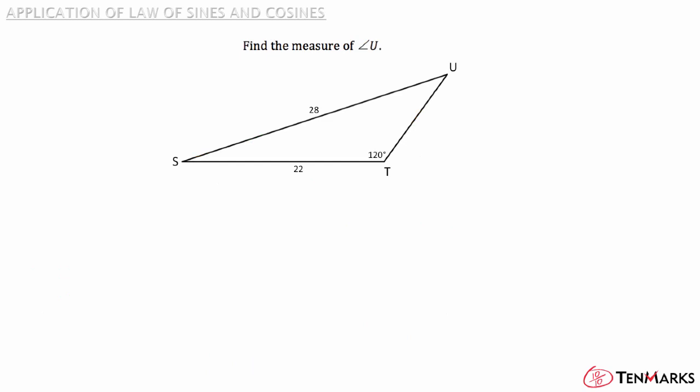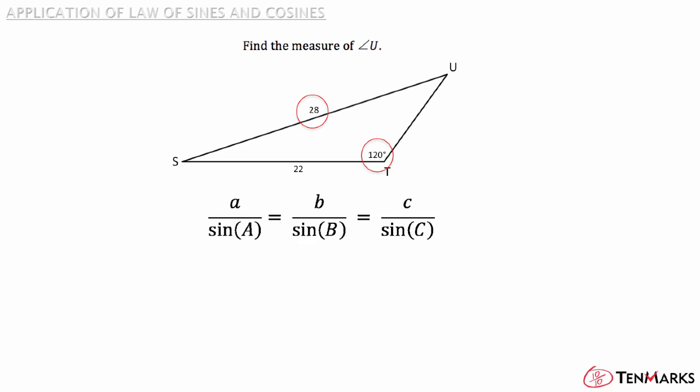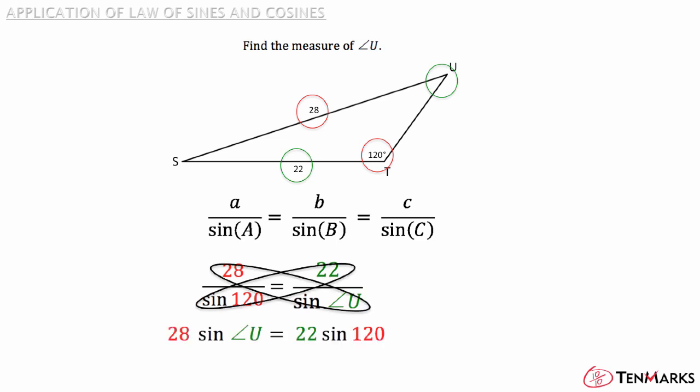Let's try another problem. Find the measure of angle U. First, figure out which trig function to use. Since this is not a right triangle, you can't use SOHCAHTOA. You need to figure out if you can use the Law of Sines or Cosines. To use the Law of Sines, you need one side and its opposite angle. Notice that you have that in this triangle, so use the Law of Sines to solve for angle U. Use the given side and the angle opposite that side to set up the proportion, then use the unknown angle and the side opposite that for the second fraction. Cross-multiply, simplify, and take the inverse sine to find that angle U is equal to 42.9 degrees.